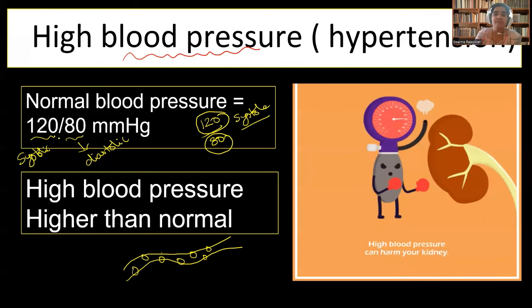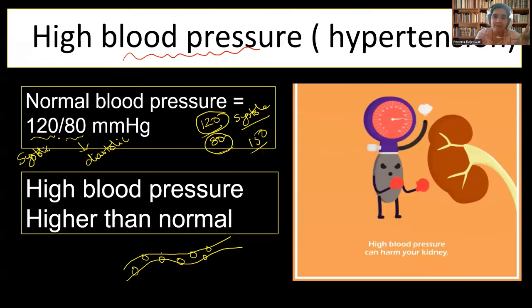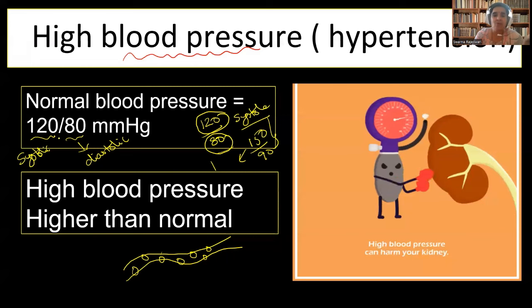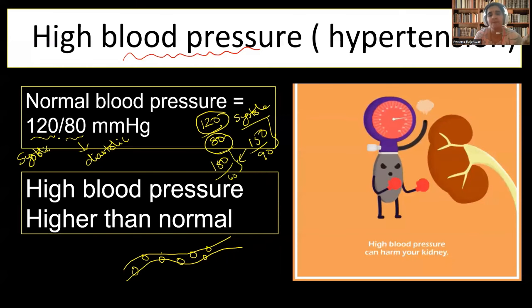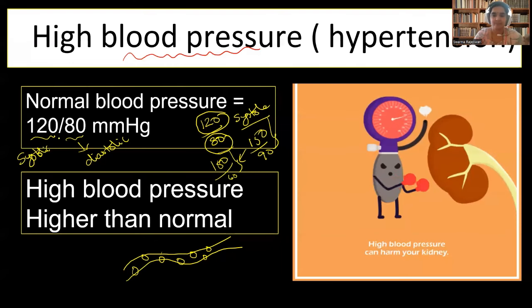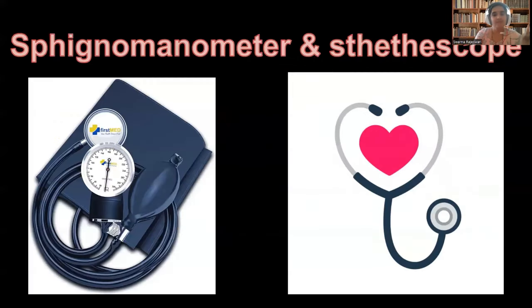Normal blood pressure is about 120/80 mmHg. More than 150/90 we call high blood pressure, which is called hypertension. Sometimes it may be very low — less than 100/60 — we call it low blood pressure or hypotension. When we see how BP is measured, it is measured by using the instrument called sphygmomanometer, which is used to measure the BP of an individual.